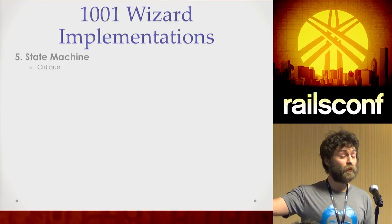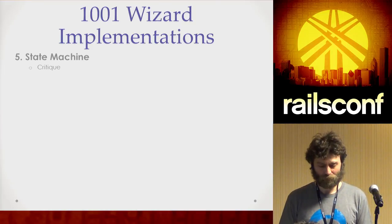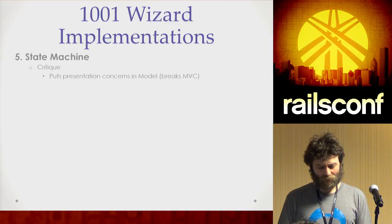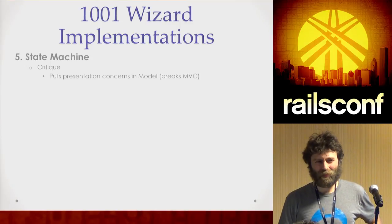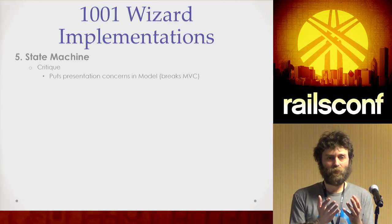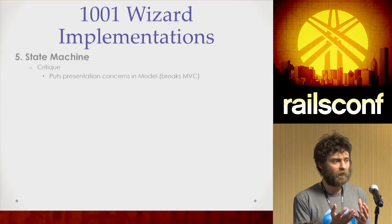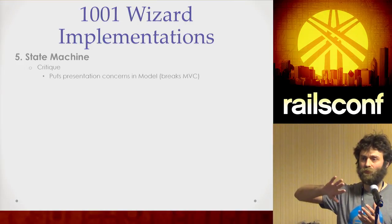With one approach, the controller is doing management of the stepping. With the state machine, the model is doing the management of the stepping. Putting presentation concerns — like adding an extra column to represent a step — is not part of the business domain. When you're doing MVC, you're trying to put in the model as much decoupled logic focused on the business as possible, in order to maintain that separately from any view concerns or controller concerns.